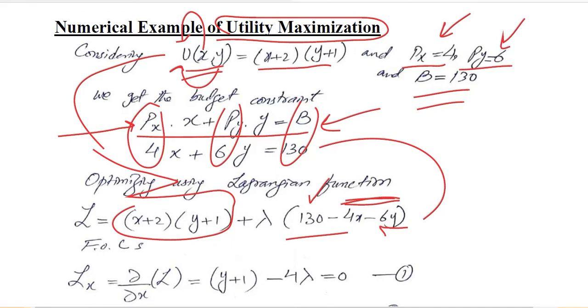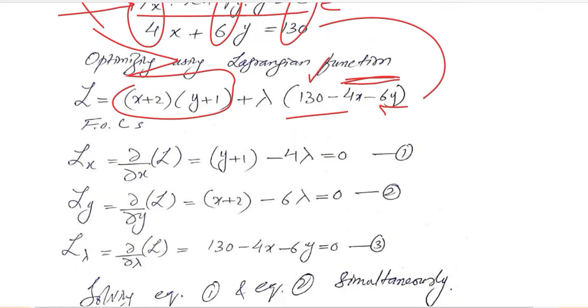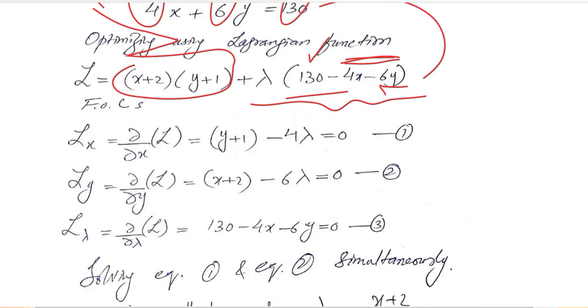Optimizing now becomes possible using the Lagrangian function because we have the objective function as well as the budget constraint. We know about solving the Lagrangian multiplier situation here. Or you can refer back to the Lagrangian multiplier method of optimization.